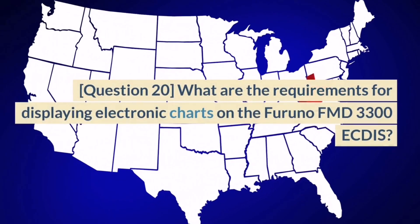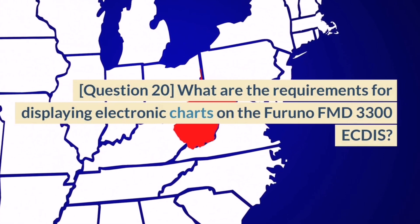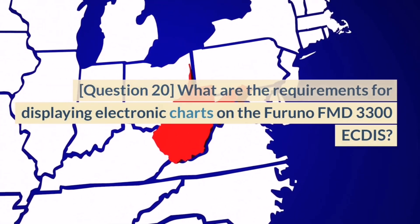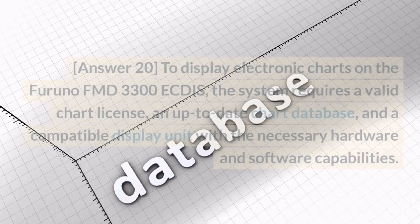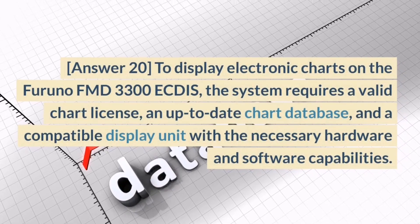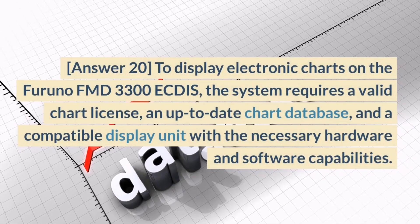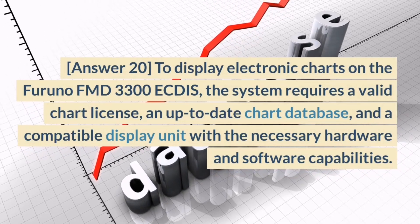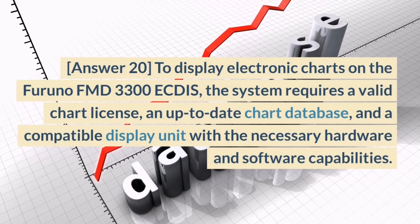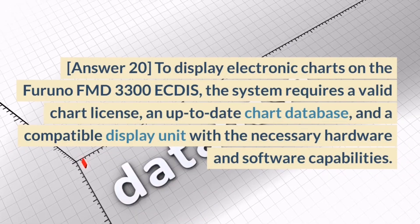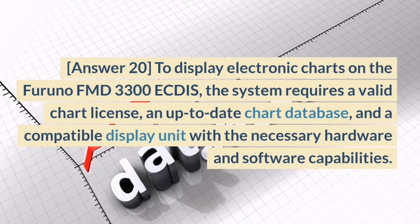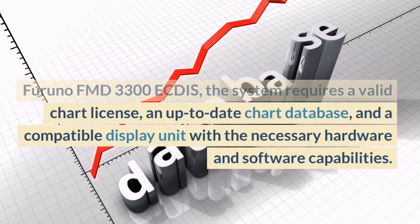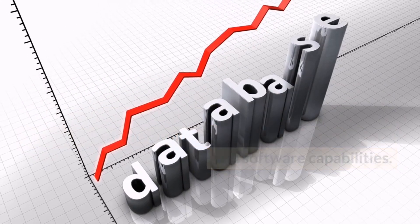Question 20. What are the requirements for displaying electronic charts on the Furuno FMD 3300 ECDIS? Answer 20. To display electronic charts, the system requires a valid chart license, an up-to-date chart database, and a compatible display unit with the necessary hardware and software capabilities.